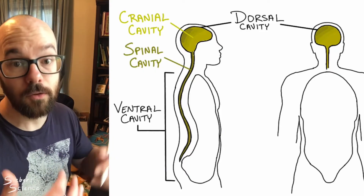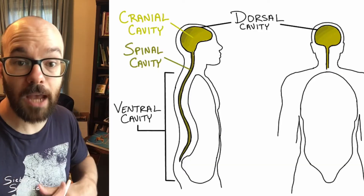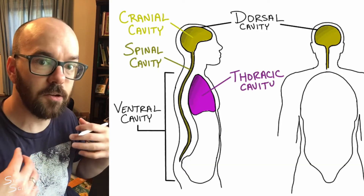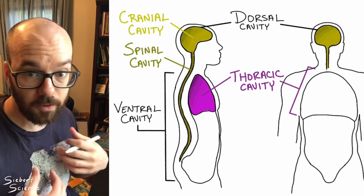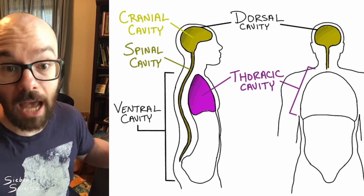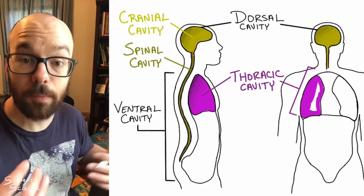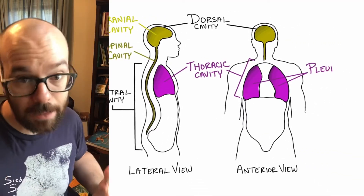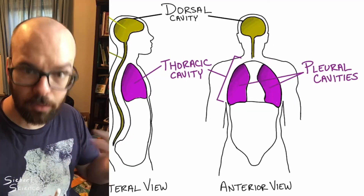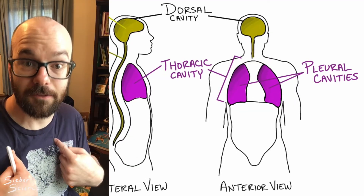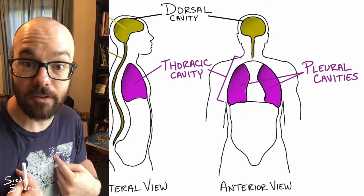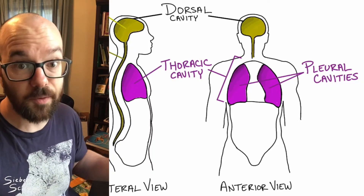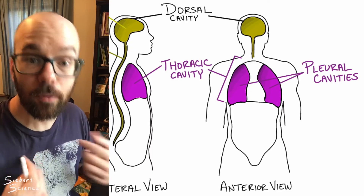The ventral cavity is broken up into smaller sub-cavities as well. The most superior of those is called the thoracic cavity, and that's going to contain your lungs, your heart, and some other organs. That thoracic cavity is divided into sub-cavities as well. The first of those is the pleural cavities, which contain the lungs. I remember the name pleural cavities by remembering that pleural sounds like plural, meaning more than one — and you've got two pleural cavities, or two lungs.